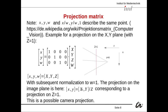That means the further a world object is away from the camera, the smaller it appears on the screen. If z is 2 it appears at half size; if z is 10 it appears at one-tenth size — as we would expect from a perspective projection.